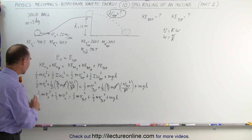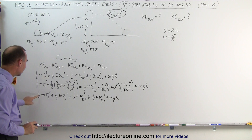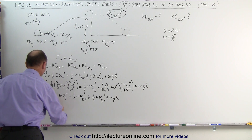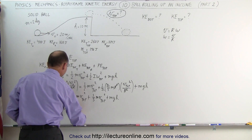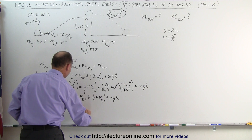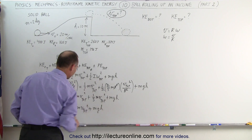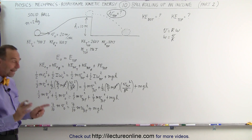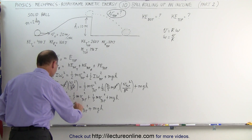Plus mgh. Now we can combine those terms: one-half plus one-fifth equals five-tenths plus two-tenths, or seven-tenths. So we get seven-tenths mv-initial squared equals seven-tenths mv-top squared plus mgh. Since we're looking for v at the top, notice we can cancel out the masses — every term has an m in it, so we can cancel that out.